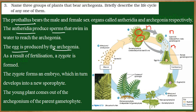Antheridia produce the sperms and Archegonium produces the egg. These reproductive organs are present on the prothallus, which is haploid in nature, so the gametes they produce are also haploid. Once these gametes fuse, a zygote is formed. When two haploid cells fuse, the cell becomes diploid in nature — the chromosome number increases after fertilization. The zygote then develops into a plant body which is diploid.